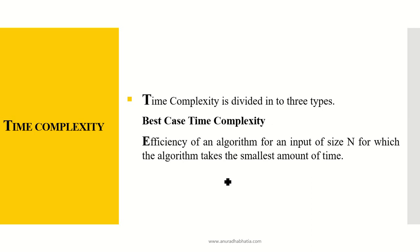Time complexity is divided into three types: best case time complexity, worst case time complexity, and average case time complexity. Best case time complexity is the efficiency of an algorithm for an input of size n for which the algorithm takes the smallest amount of time — when it takes minimum time, it is the best case complexity.